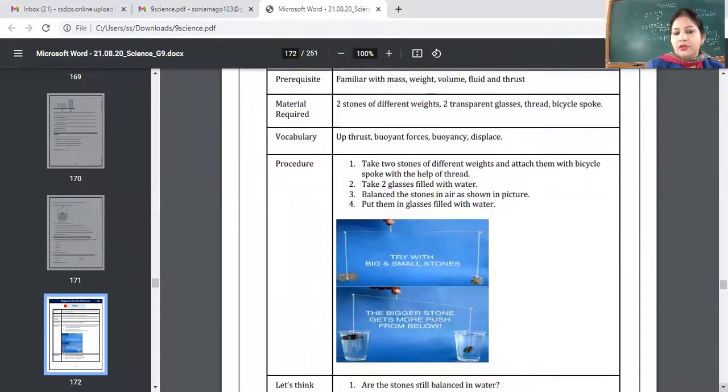So what is the procedure? You will take two stones of different weights, attach them with bicycle spoke with the help of thread. Okay, now you will take two glasses filled with water. First of all, what you have to do, you have to tie the stones with the help of threads and you have to balance it. See carefully that when there is a big stone and a small stone, balance point will not be found at the center. If you see clearly in this figure, balance point will not be found at the center.